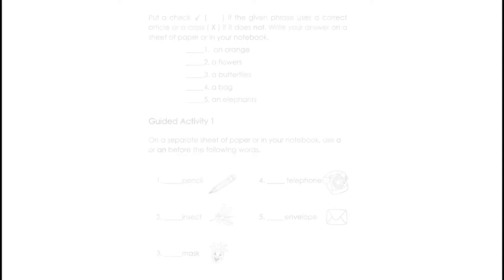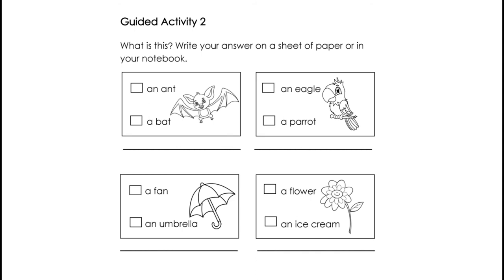Next, Guided Activity 2. What is this? Write your answer in the module. What do you see in the picture — an ant or a bat? Put a check inside the box. Next picture: what do you see — an eagle or a parrot? Put a check in the box. Next: a fan or an umbrella? And last picture: a flower or an ice cream?